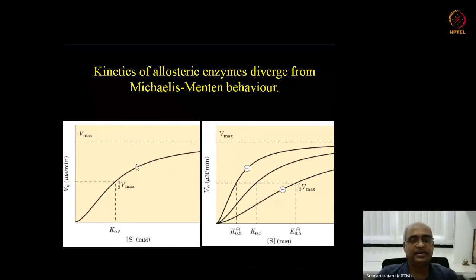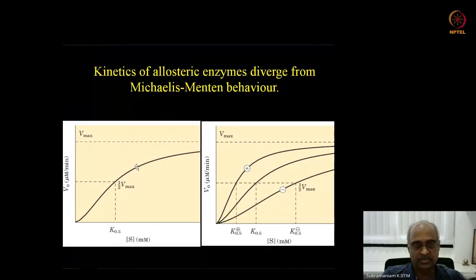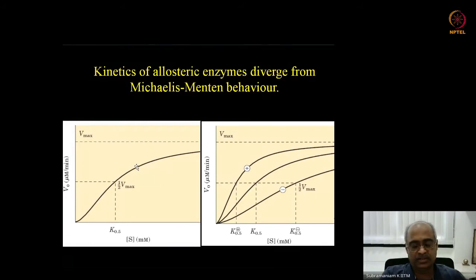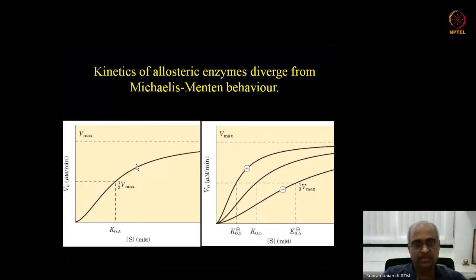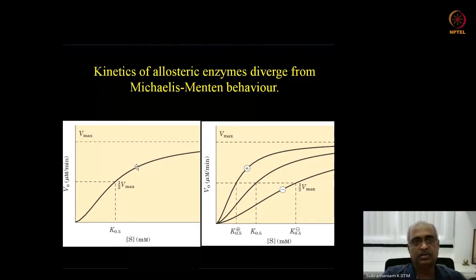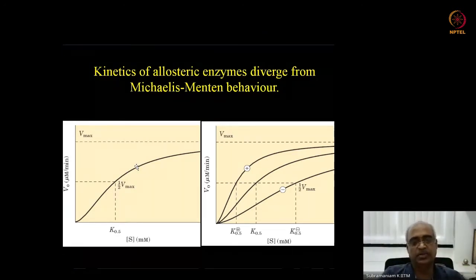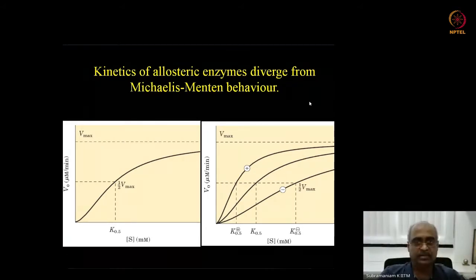In the last class we were discussing allosteric enzymes, and the very last topic was feedback regulation of allosteric enzymes in a biochemical pathway. Usually the enzyme catalyzing the committed step or one of the earliest steps in the pathway is subject to feedback inhibition by the end product of that particular pathway.